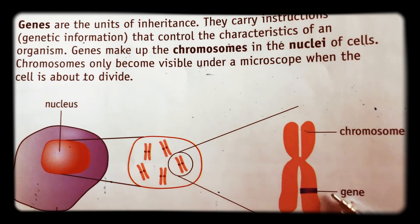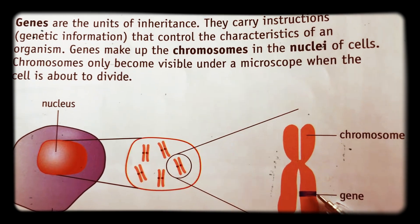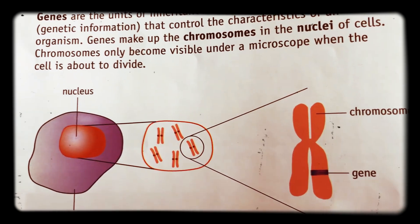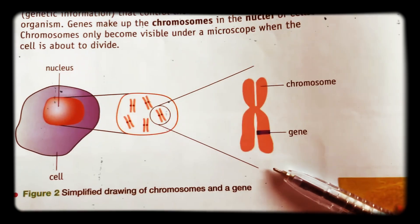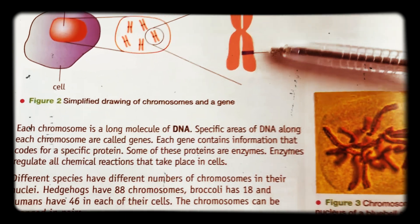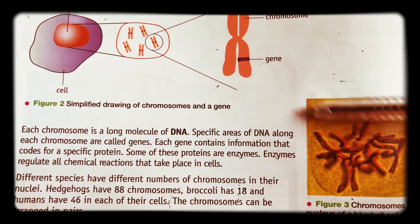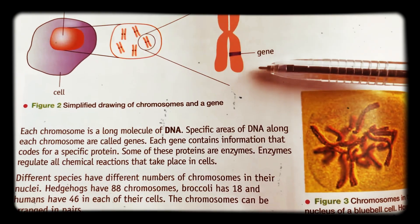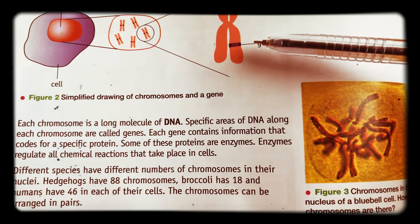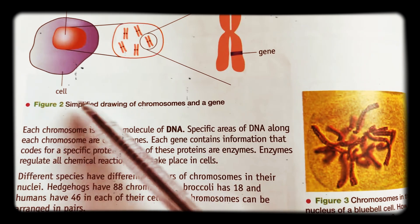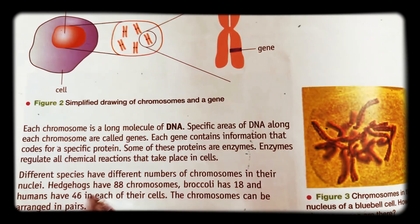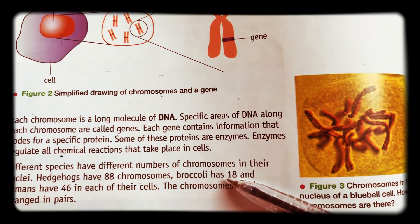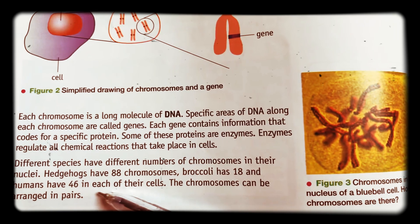On the chromosome you would have a small section called a gene. Genes are the units of inheritance and they carry the genetic information that controls the characteristics of the organism. Genes make up the chromosomes in the nuclei of cells and only become visible under a microscope when the cell is about to divide. These chromosomes are long molecules of DNA. The specific areas of DNA on each chromosome are called genes, and these genes contain information that codes for specific proteins — some of these proteins are enzymes. They help regulate all the chemical reactions inside the cell. Different species have different numbers of chromosomes: a hedgehog cell has 88 chromosomes (44 pairs), broccoli has 9 pairs making 18, and humans have 46 chromosomes in each cell — 23 pairs.